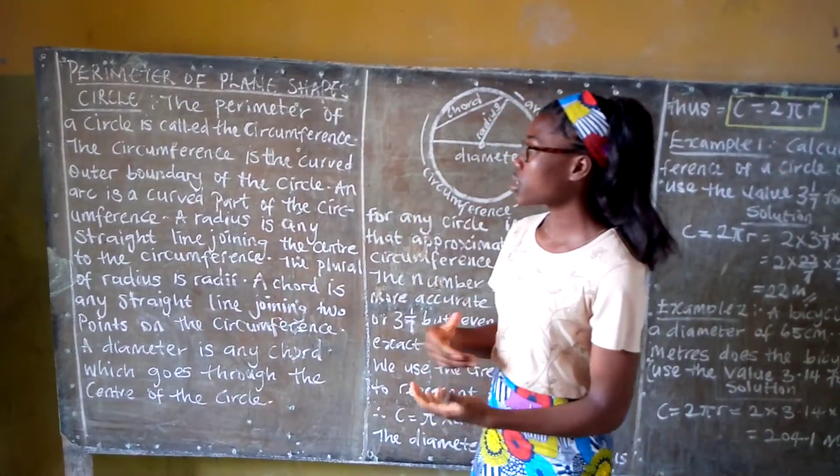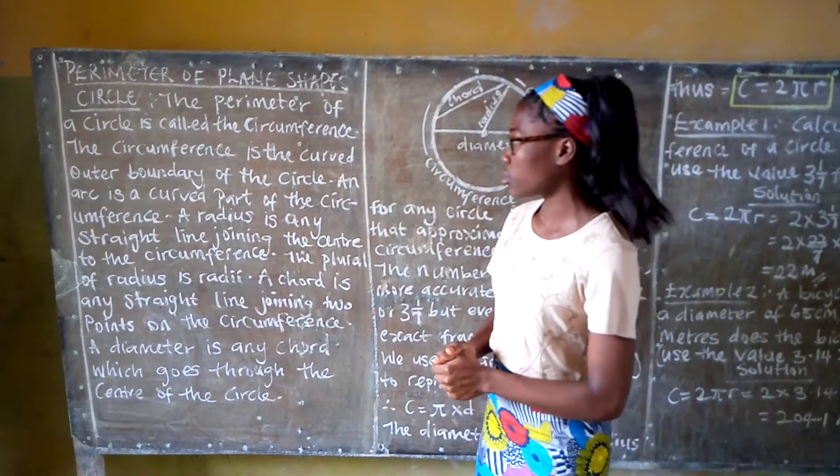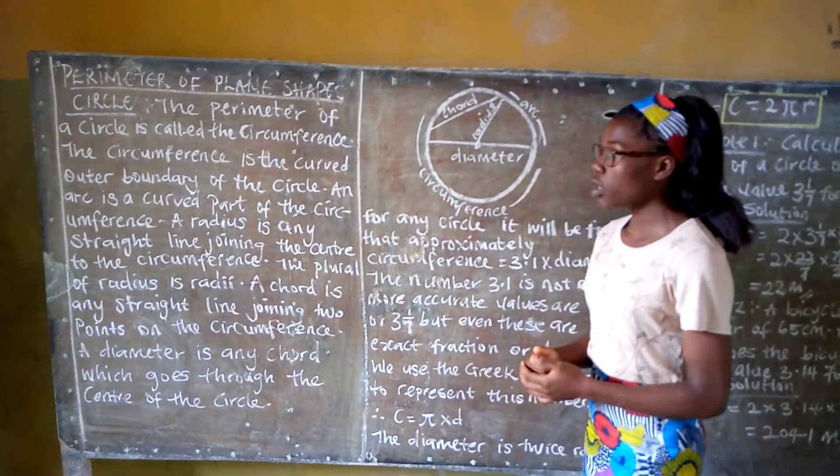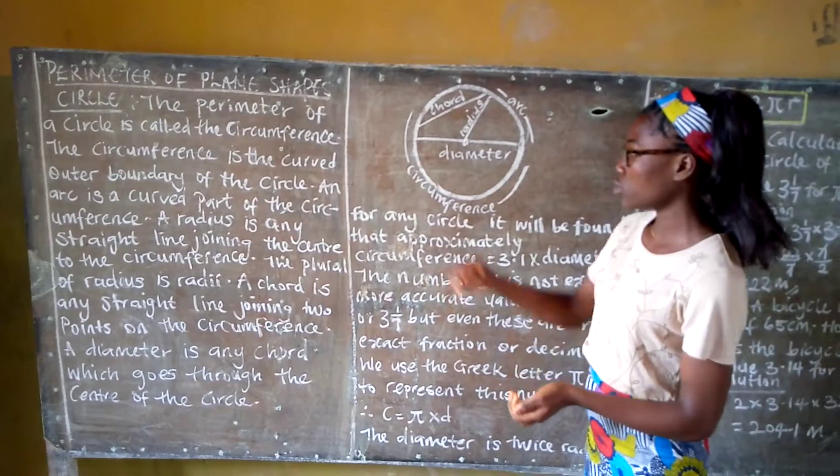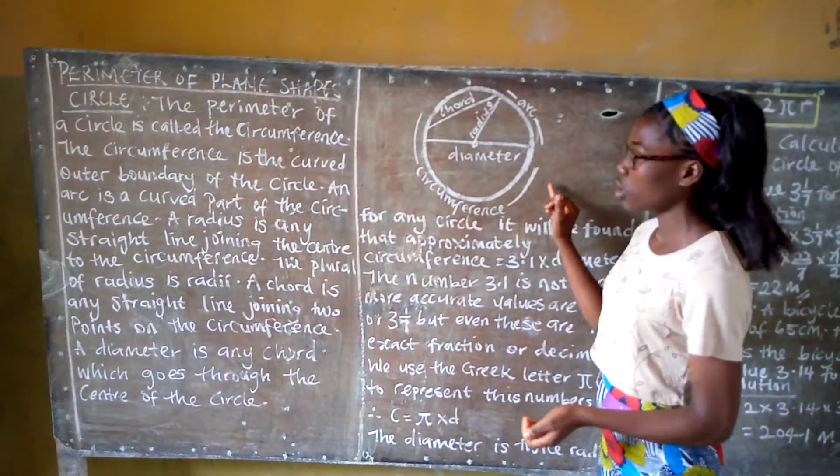The perimeter of the circle is called the circumference. The circumference is the curved outer boundary of the circle.